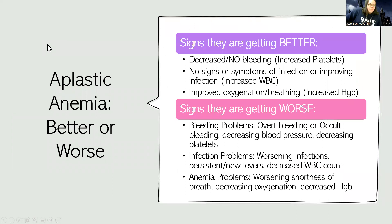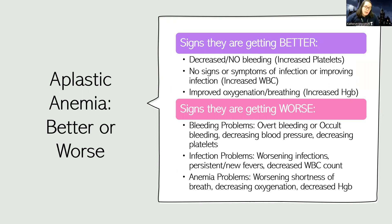How do I know if they're getting better or worse? A patient with aplastic anemia is getting better if they have decreased or no bleeding — a sign their platelets are recovering. We also hope for no signs or symptoms of infection, or improvement in their infection, meaning they finally have the defenses to fight it. We may also see improved oxygenation, improved breathing, or an increased hemoglobin.